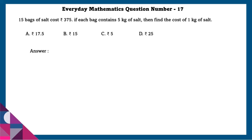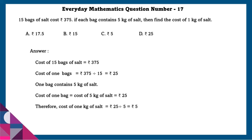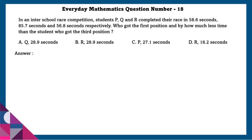Question 17: 15 bags of salt cost 375 rupees. If each bag contains 5 kg of salt, find the cost of 1 kg of salt. Cost of 15 bags is 375 rupees. Cost of one bag is 375 ÷ 15 = 25 rupees. Since one bag contains 5 kg, cost of 1 kg is 25 ÷ 5 = 5 rupees.